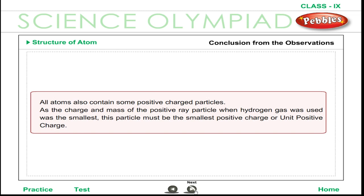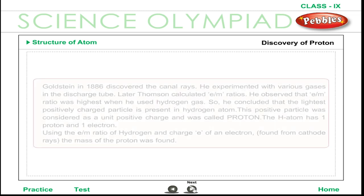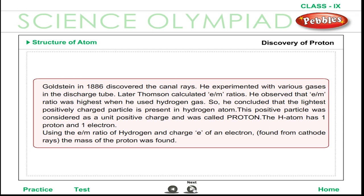The conclusion from these observations is that all atoms also contain some positively charged particles. As the charge and mass of the positive ray particle when hydrogen gas was used was the smallest, this particle must be the smallest positive charge or unit positive charge. Goldstein in 1886 discovered the canal rays and experimented with various gases in the discharge tube. Thomson calculated E/M ratios and observed that the E/M ratio was highest when hydrogen gas was used. So he concluded that the lightest positively charged particle is present in the hydrogen atom.